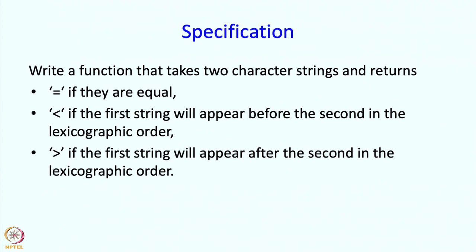The function that we are going to write has the following specification. It takes two character strings and returns equal to if the strings are exactly equal. So it returns the character equal to. It returns the character less than if the first string will appear before the second in the lexicographic order. And it will return greater than if the first string will appear after the second in the lexicographic order. This is an order between words and you can say that something appears before, so it is smaller. That is also an implied notion or an associated notion.